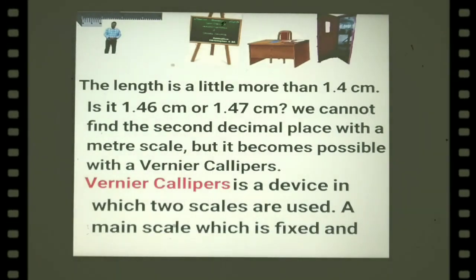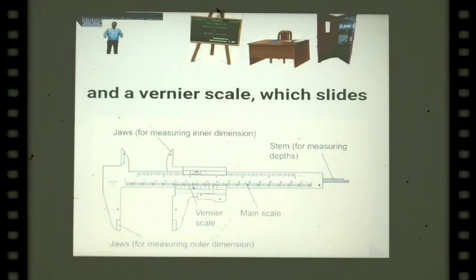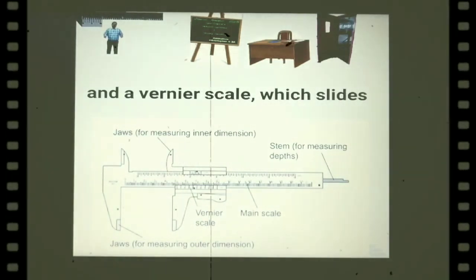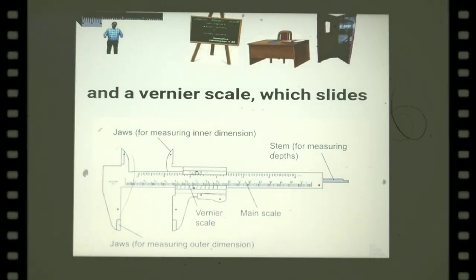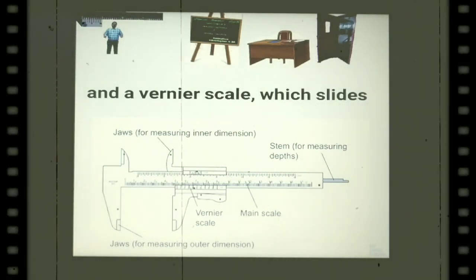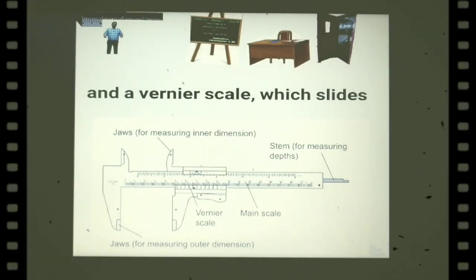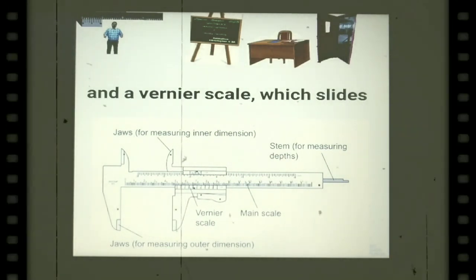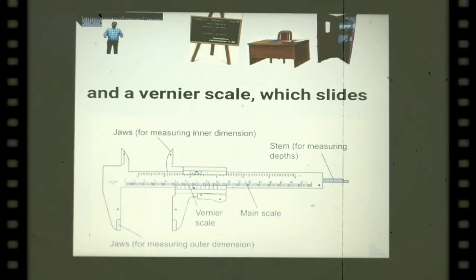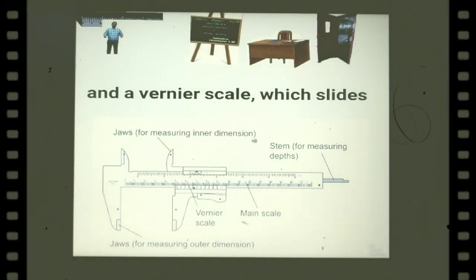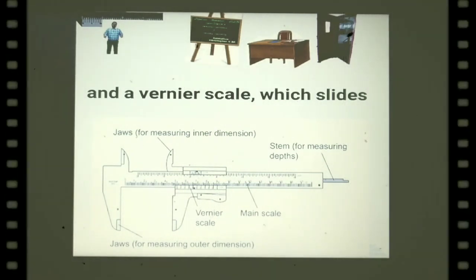A vernier calipers is a device in which two scales are used: a main scale which is fixed, and a vernier scale which slides on the main scale. As seen in the figure, there is a stem at the back for measuring depth, jaws on top used for measuring the inner diameter of a beaker, jaws below used to measure outer dimensions, and both a main scale and a vernier scale.